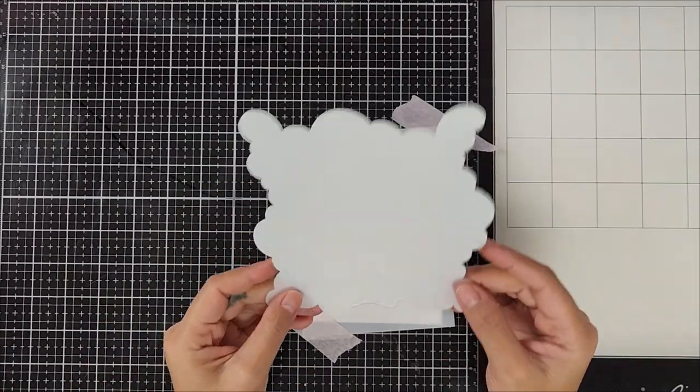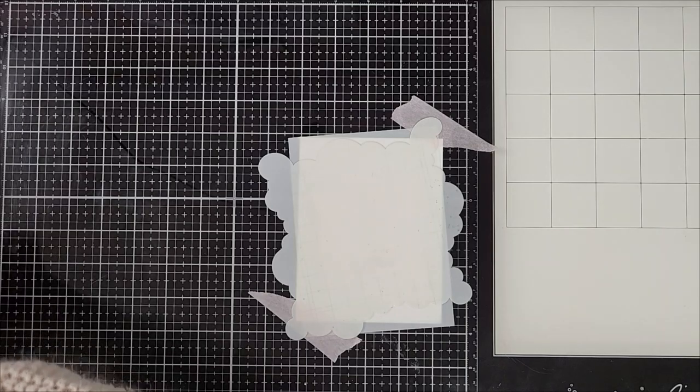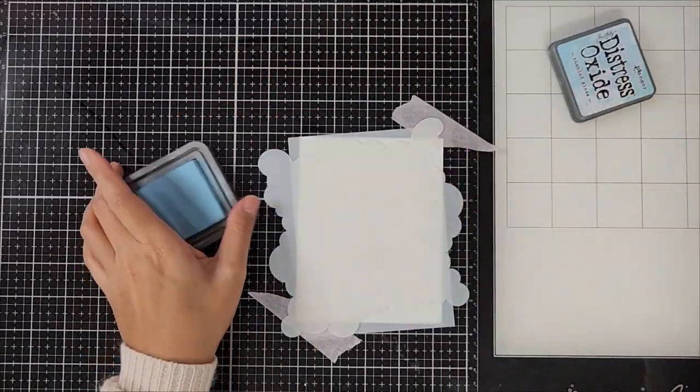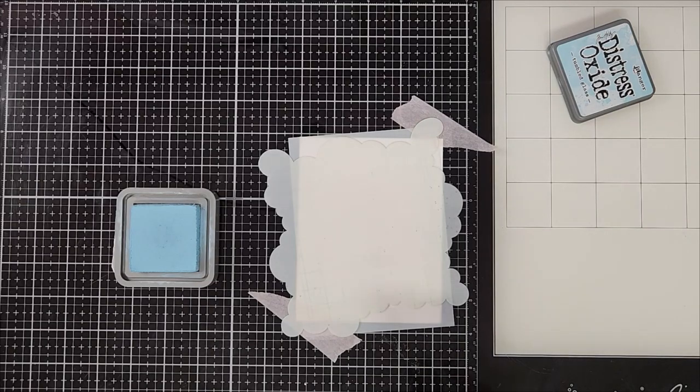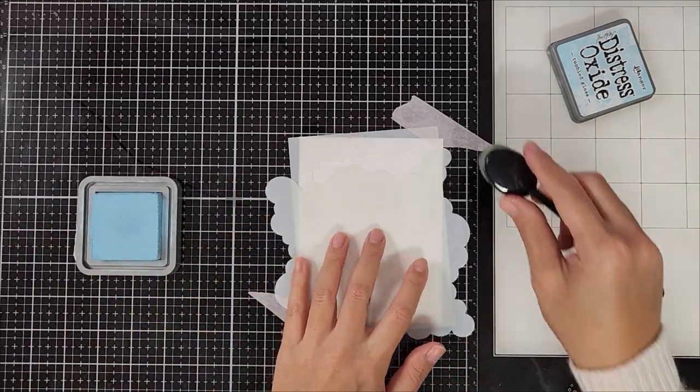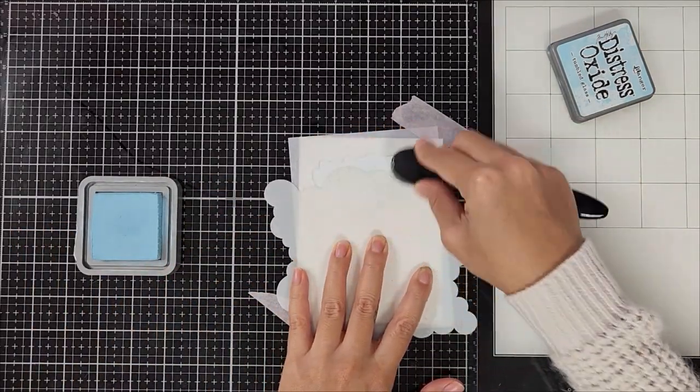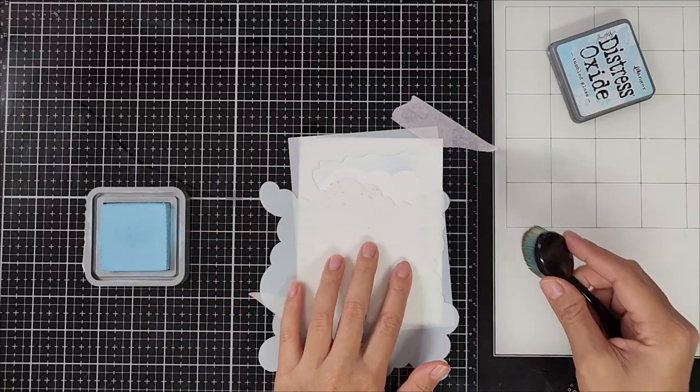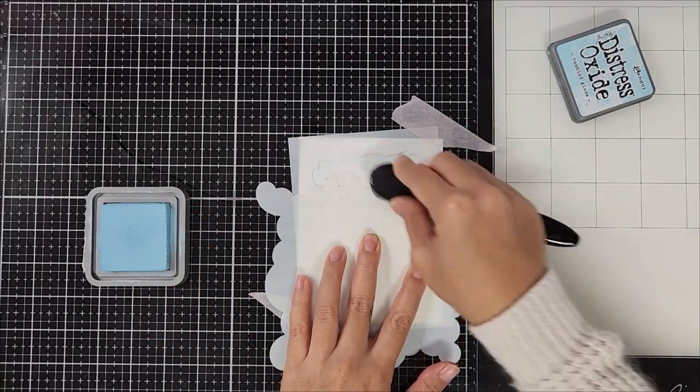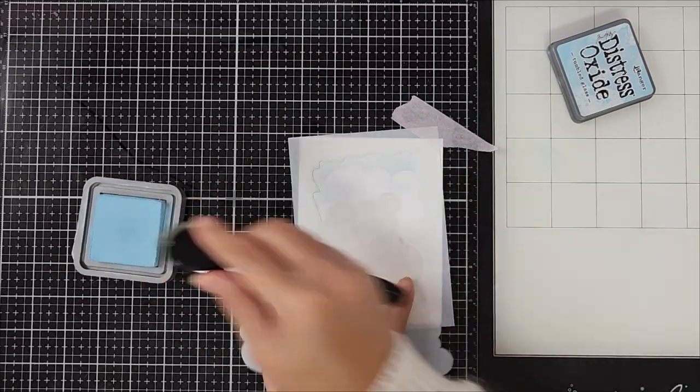Once I was happy with the layout, I went ahead and taped it down to my work surface. Now going in with a stencil, this one's from Lawn Fawn, this is a cloudy stencil, and I'm using Distress Oxide Inks in Tumbled Glass. I'm going in with my blending brush and blending out a cloud scene. I'm only blending it out on the upper half of the card stock.